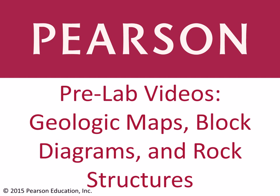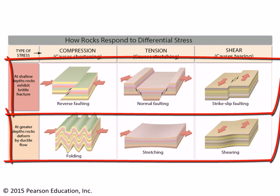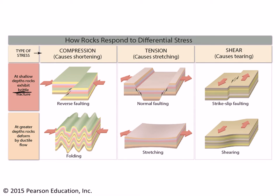These are structures that form under different conditions of stress. We can classify these structures as to whether they are brittle or ductile in nature. Brittle means that the rocks are breaking, whereas ductile means the rocks are flowing instead. And if we are compressing the rocks, as in the first column here, and they're behaving in a brittle fashion, we'll end up getting reverse faulting.